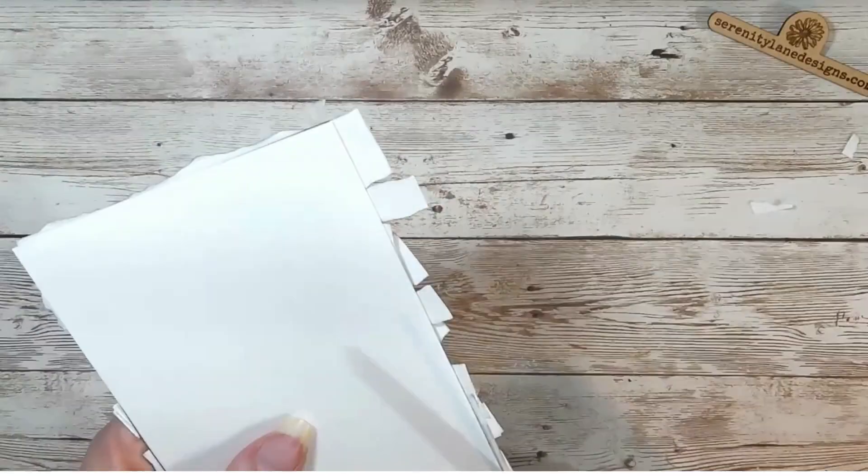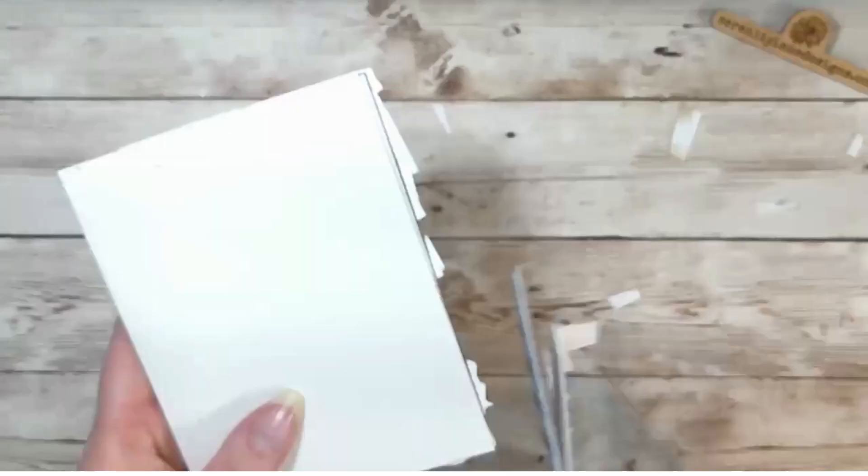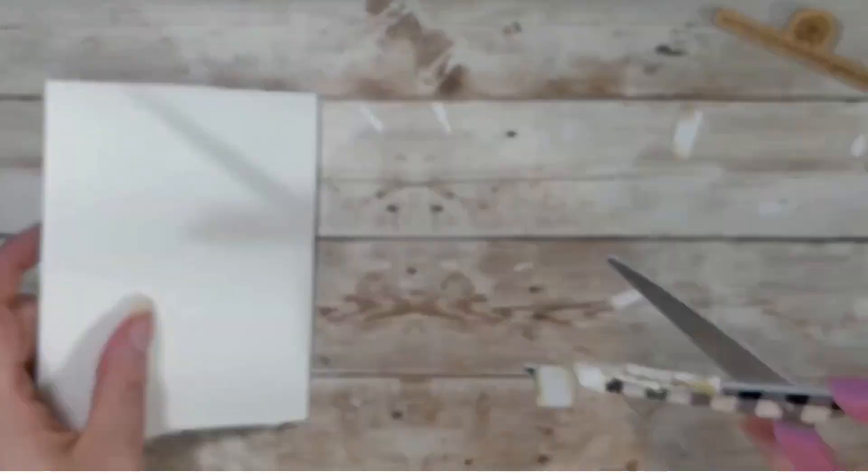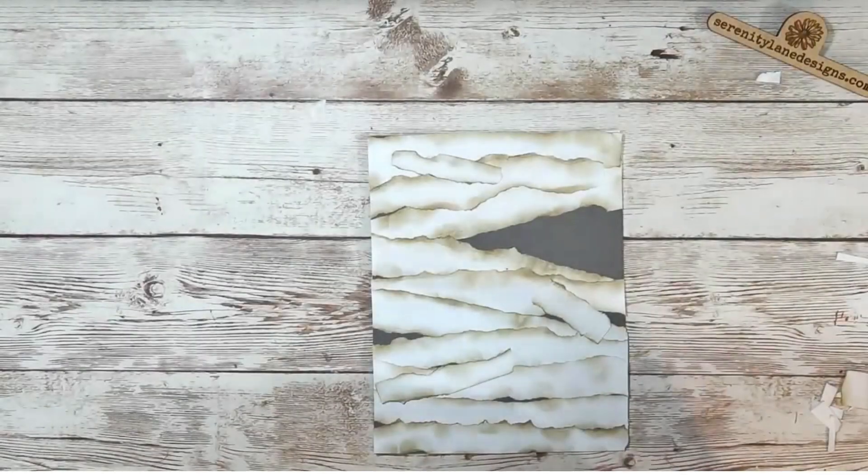Don't worry about going off over the edge because we can go back through and cut them off. Okay, once they're all on, go back through, turn it over, and you can slice the edges off to make it nice and clean. There you've got it.